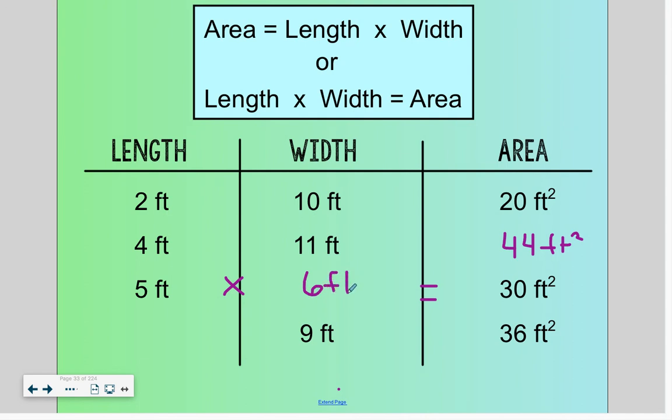And our last missing side length, 36 divided by 9, or what number times 9 is going to give you 36. And that answer is 4.